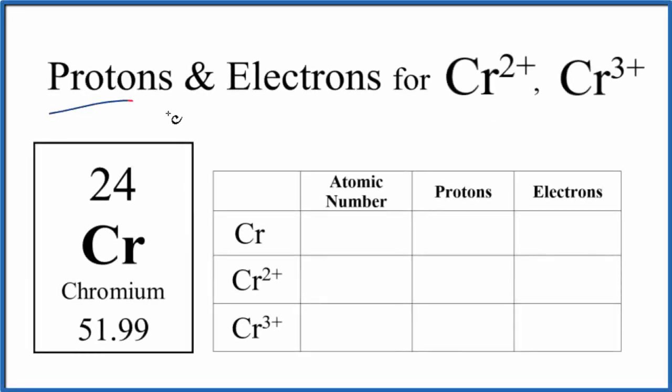In this video, we'll find the number of protons and electrons for Cr²⁺, Cr³⁺, and then neutral Cr. So this is the chromium 2 ion, chromium 3 ion, and then just neutral chromium.